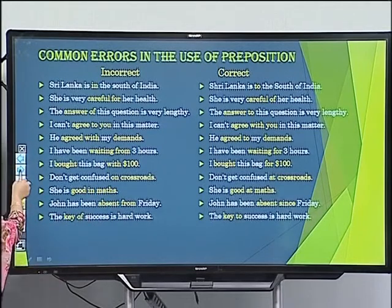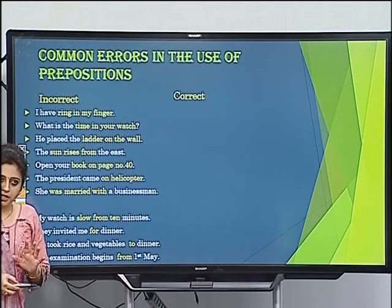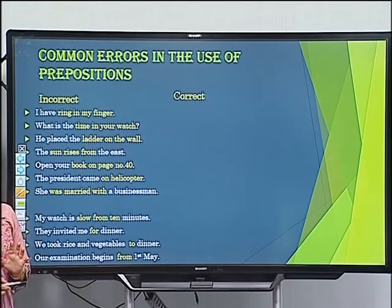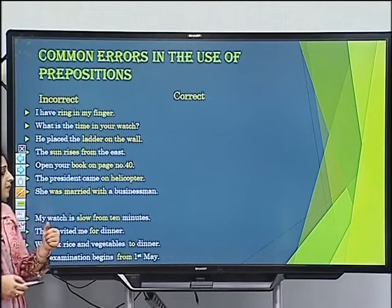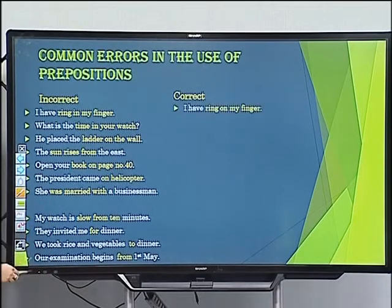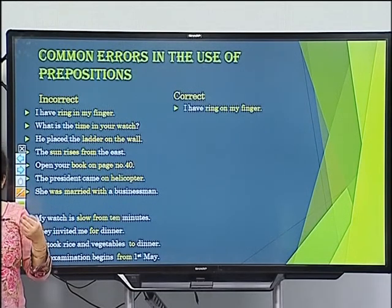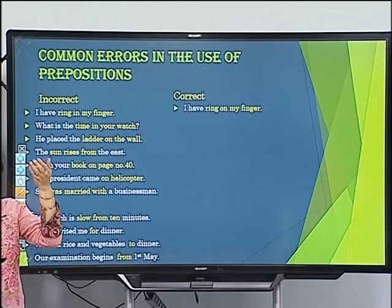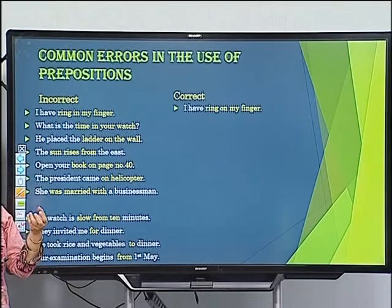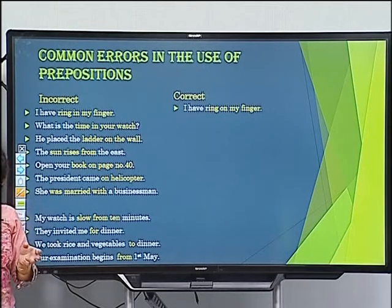Error: 'I have a ring in my finger.' Whenever we talk about garments or jewels, we prefer 'on.' Correct: 'I have a ring on my finger.' Similarly, 'put on your clothes.' When talking about clothing or adornments, use 'on.'